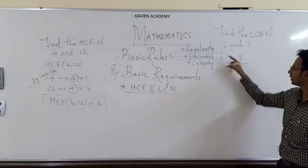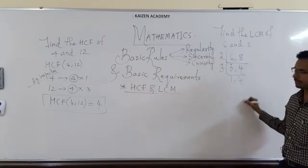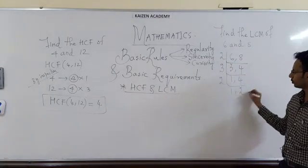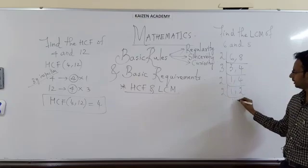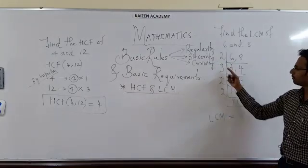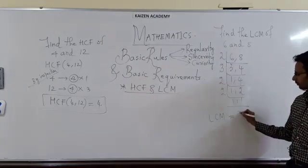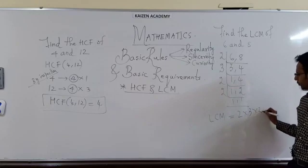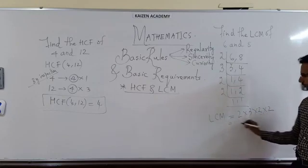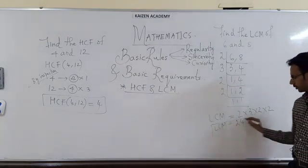You generally take the LCM with prime factors. 2, 3 is 6. 2, 4 is 8. Then we take from 3: 3, 1 is 3. We take 4 down. Further we can take 2: 2, 2, 2 is 4. And finally 2, 1 is 2. So the LCM will be the multiple of all these factors: 2 into 3 into 2 into 2. 2 threes are 6, 6 twos are 12, 12 twos are 24. We have determined LCM is 24.